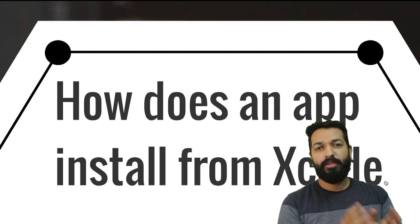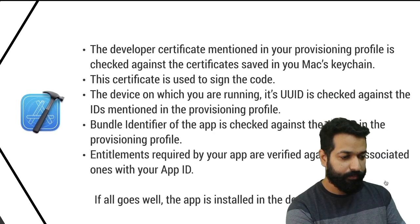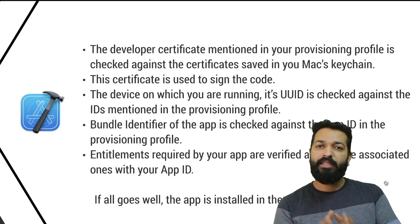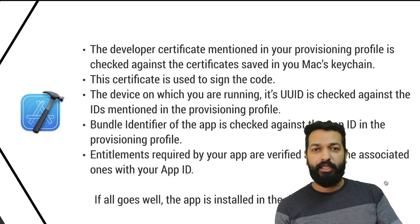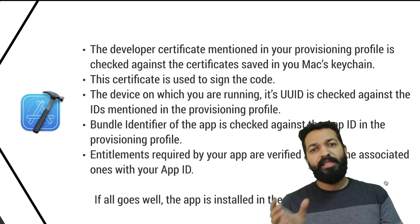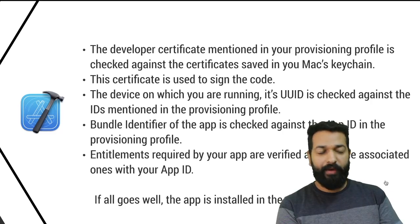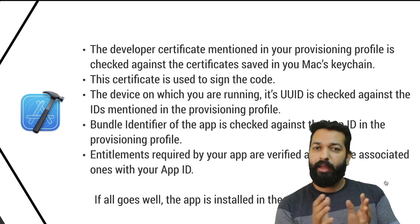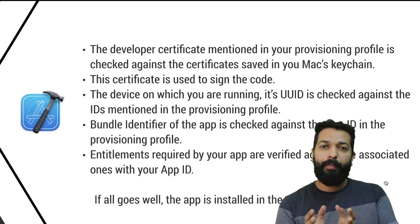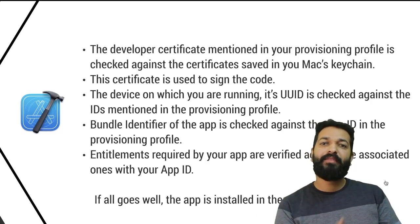Now let's see how an app runs from Xcode — what actually happens when we hit Command+R. Once the build is done and there are no compilation errors, a number of checks are made. The developer certificate mentioned in our provisioning profile is matched against the certificate in our Mac keychain. If a match is found, that certificate is used to code sign our bundle. Once code signing happens, the device is checked for authenticity — its UUID is checked against the UUIDs mentioned in the provisioning profile. If that passes, the bundle identifier of our application is checked against the bundle identifier in the app ID of the provisioning profile. Then the entitlements required by our app are verified against the associated ones with the app ID. If all checks pass and everything goes smoothly, installation takes place; otherwise the app install fails.